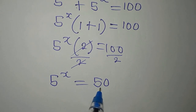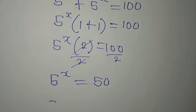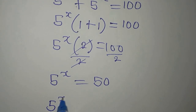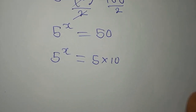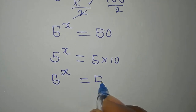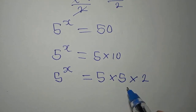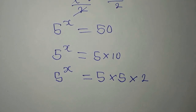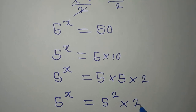We cannot express 50 directly in exponential form, so we note that 50 can be written as 5 times 10. And 10 is still 5 times 2, so 50 equals 5 times 5 times 2. Therefore, we can write 5 to the power of x equals 5 squared multiplied by 2.